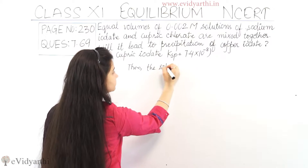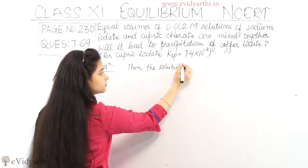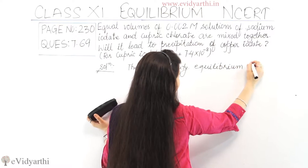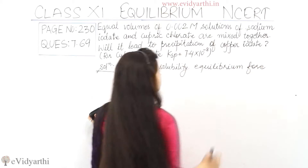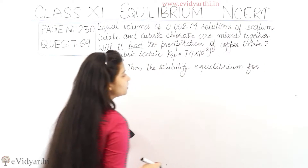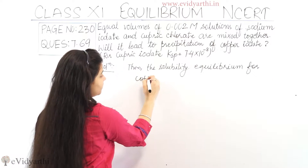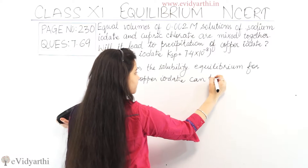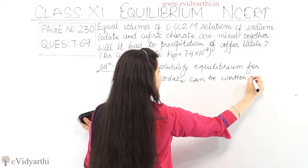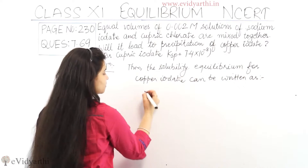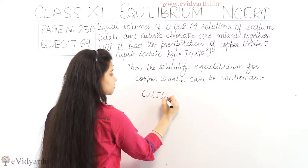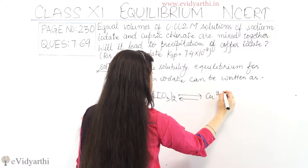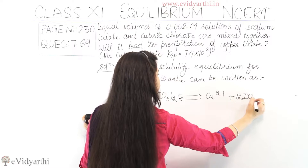The solubility equilibrium for copper iodate can be written as: Cu(IO₃)₂ gives Cu²⁺ plus 2IO₃⁻.